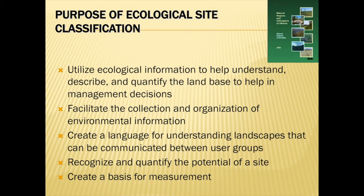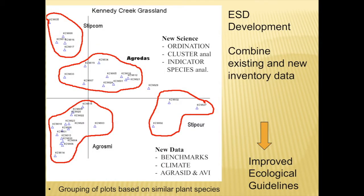Here's an example of using multivariate analysis to cluster plot data into a number of potential plant community types. In addition to multivariate techniques, we may also use cluster analysis, and together when we combine that with environmental data and information about disturbance history, we're able to make sense of these clusters and describe them as plant communities — either reference plant communities or successional plant communities.